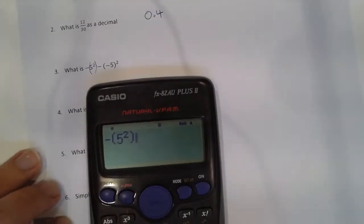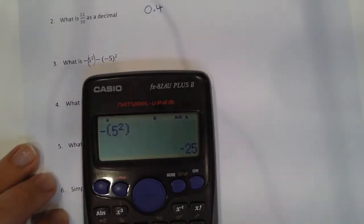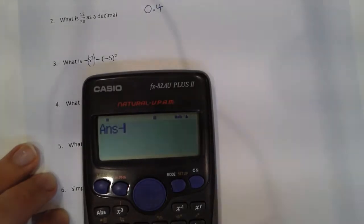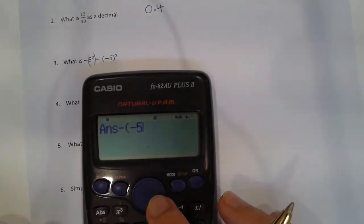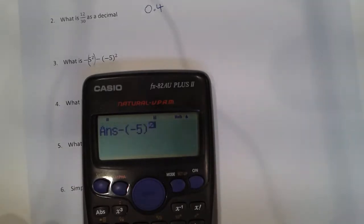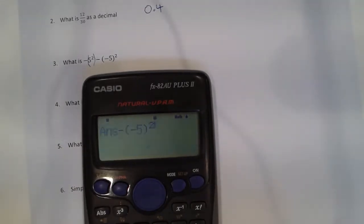So make sure you are using the brackets. And you are taking away, again, brackets. This time the squared goes outside the brackets, which will give us minus 50.